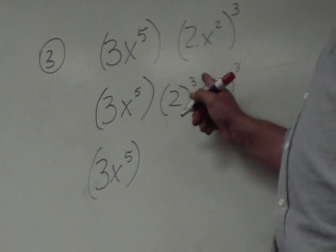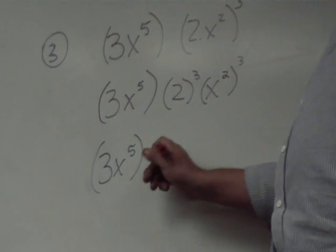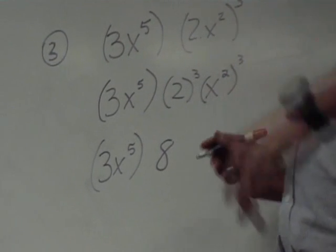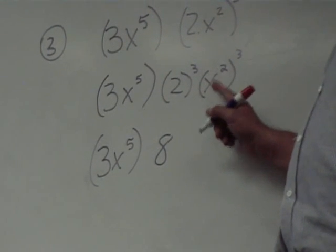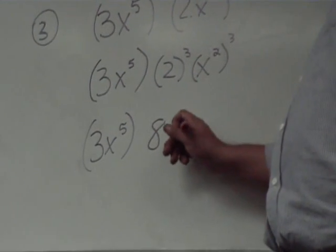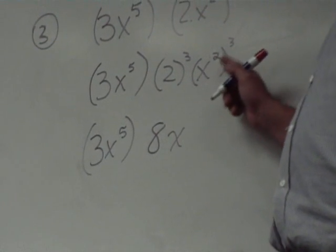What is 2 to the third power? 8. 2 times 2 is 4 times 2 is 8. What is x squared to the third? x to the - is it fifth or sixth? What do we do when we raise the power to a power? That will be this one here. You multiply the exponent so this is 6.